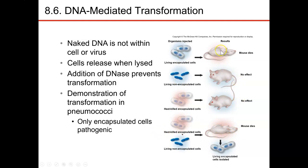The mouse died. When he looked at the blood of the mice, he found living encapsulated cells in that group, but found nothing in the others. He thought, I didn't have encapsulated cells initially, so something transformed these cells into encapsulated cells. And he called that transformation.